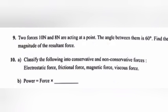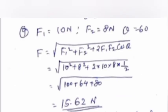Answer: F₁ equals 10 N, F₂ equals 8 N, theta equals 60. F equals root of F₁² plus F₂² plus 2 F₁ F₂ cos theta equals root of 10² plus 8² plus 2 into 10 into 8 into half equals root of 100 plus 64 plus 80 equals 15.62 N.